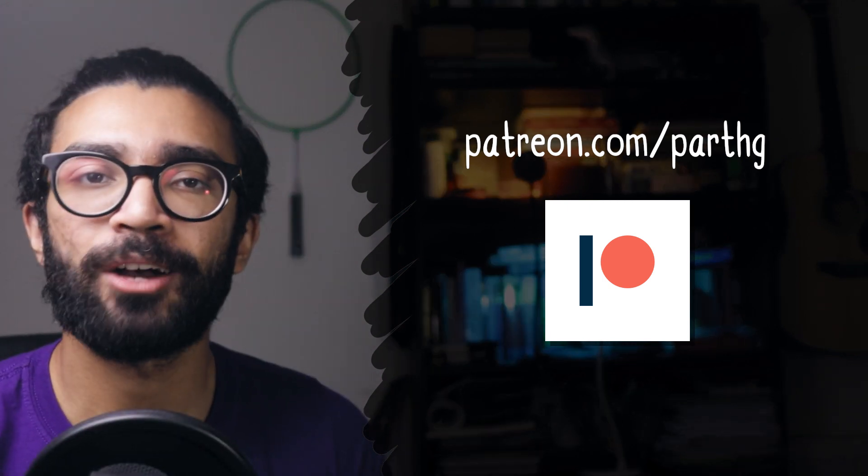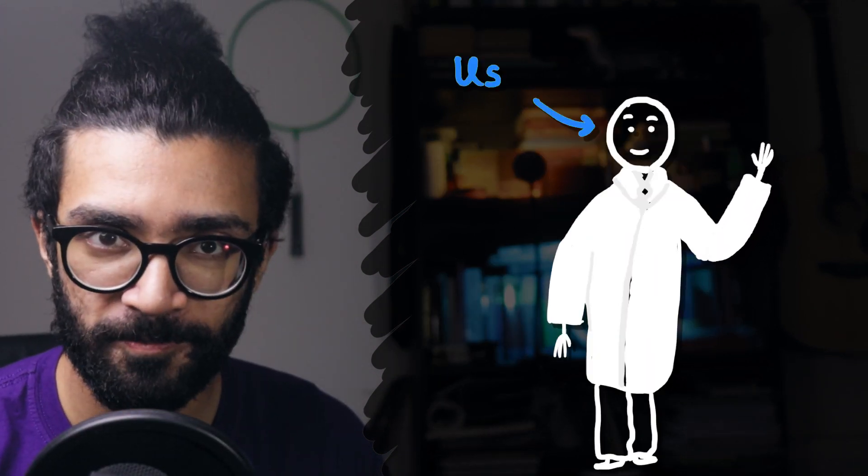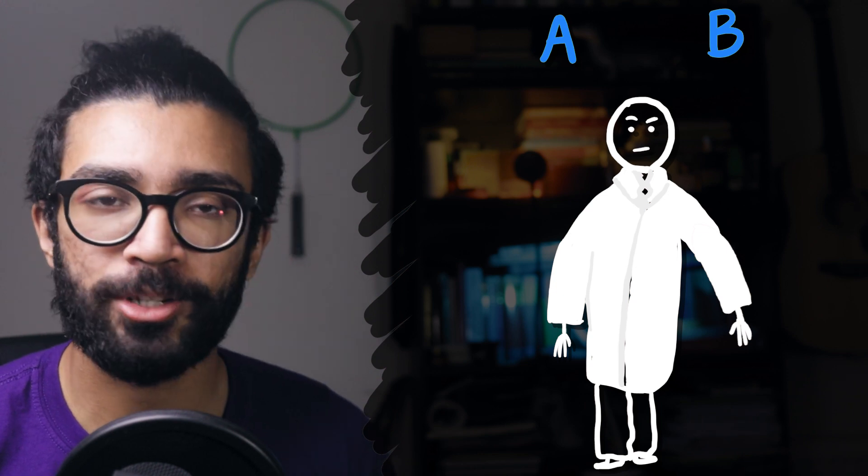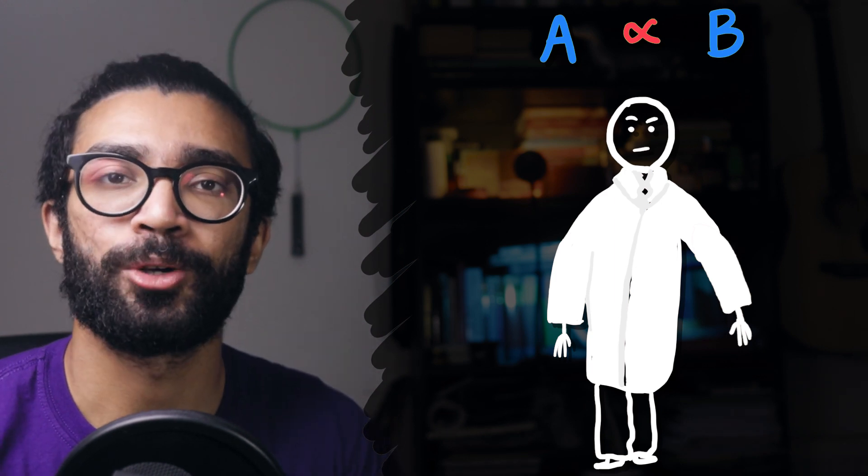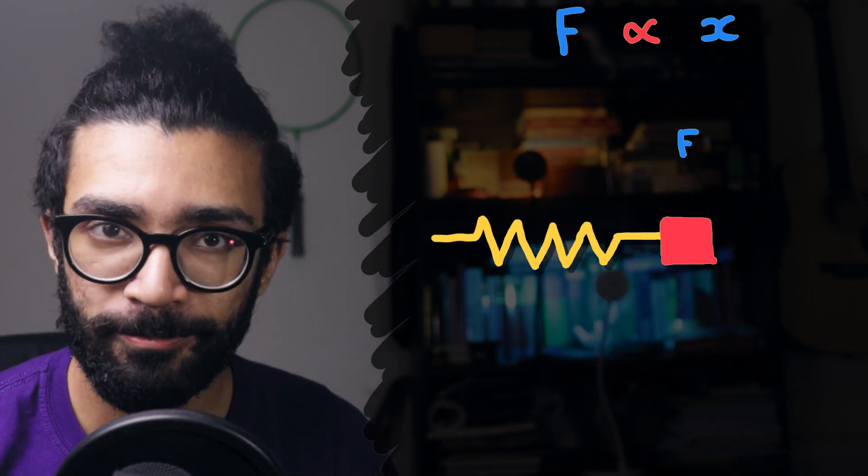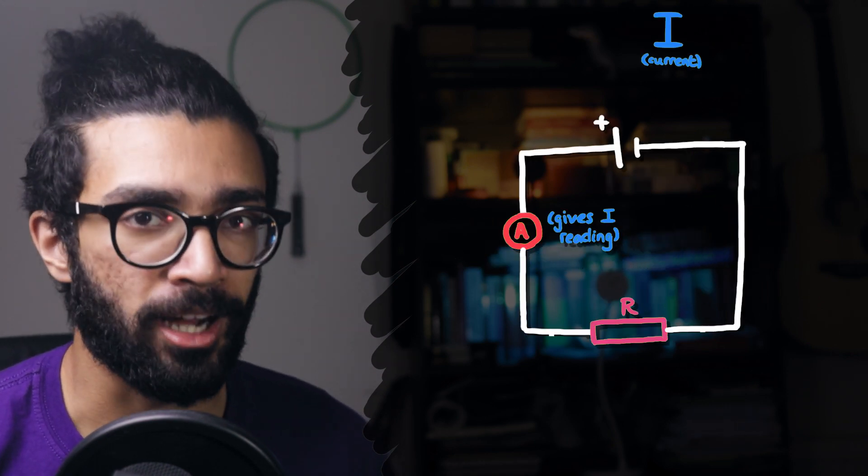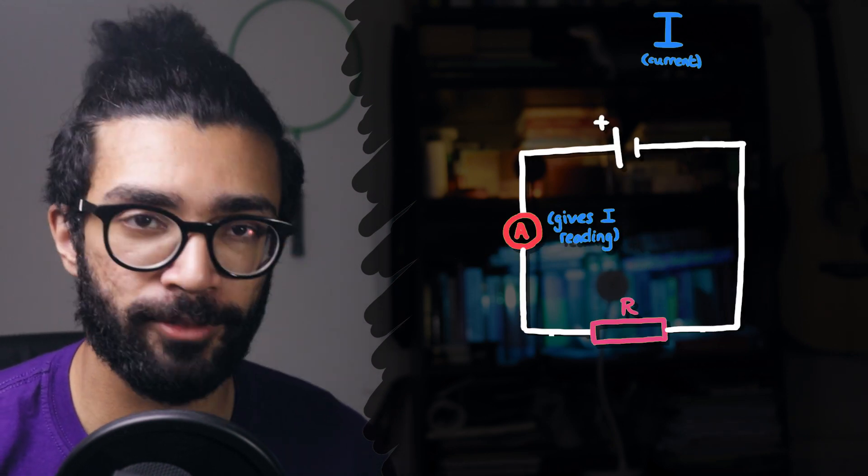Now let's start by assuming that we are conducting some sort of experiment to figure out whether two quantities are related to each other. Specifically, we're trying to find out whether the two quantities are directly proportional. For example, we could be trying to show that the force exerted by a spring is directly proportional to the extension of the spring, or we could be trying to measure the current through a resistor as we change the voltage across it.